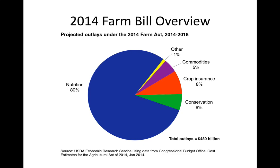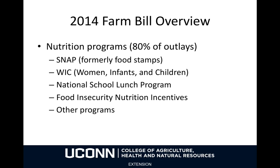The 2014 Farm Bill, as it's popularly called, or Farm Act, appropriated funding for USDA from 2014 through the end of 2018. It provides funding for nutrition assistance programs, conservation programs for farmers, commodity programs, and crop insurance. About 80% of the outlays under the 2014 Farm Bill were on SNAP, the Supplemental Nutrition Assistance Program, formerly known as Food Stamps, WIC, the Women Infants and Children Program, the National School Lunch Program, the Food and Security Nutrition Incentives Program, and other nutrition assistance programs.